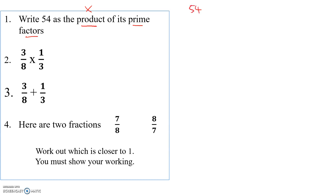Put 54 at the top and we start a tree. Is it even? Yes. Can I divide it by two? Yes. Let's put a two there — two is prime. Two times what makes 54? So 27. Is 27 prime? No.